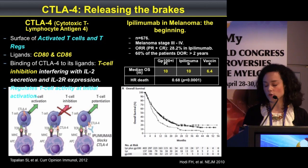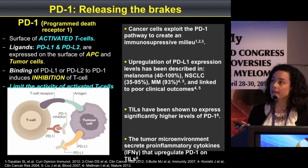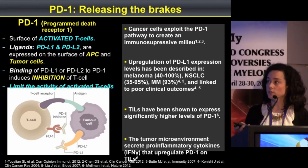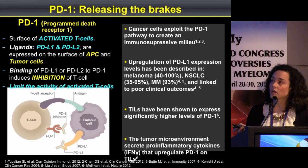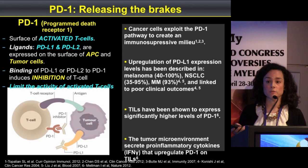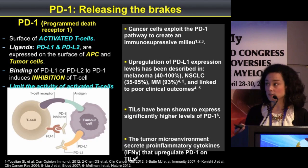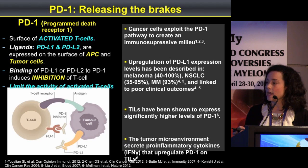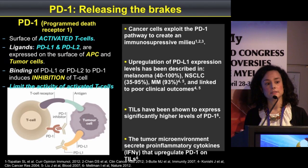On the other hand, we have PD-1 inhibitors. PD-1 is an inhibitory receptor expressed on the surface of activated T cells. Its ligands are PD-L1 and PD-L2, which are expressed on both antigen-presenting cells and tumor cells. When PD-1 binds to its ligands, there is inhibition of the T cell response. The function of PD-1 is to limit the activity of activated T cells once the immune response is already ongoing.